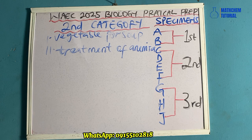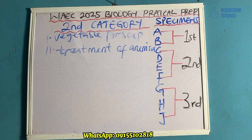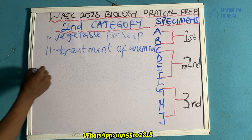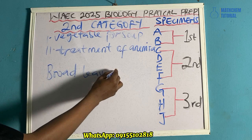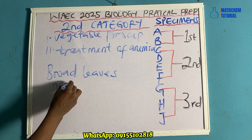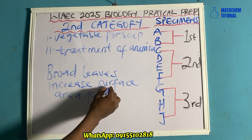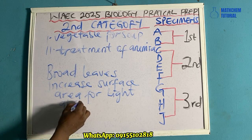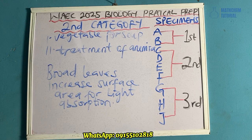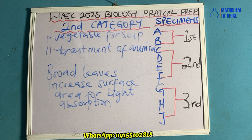Another question they can ask you in this second category is to state one way in which specimen C is adapted for photosynthesis. The answer is: it has broad leaves which increase the surface area for light absorption. So because of the broad leaves which increase the surface area for light absorption, specimen C is adapted for photosynthesis.